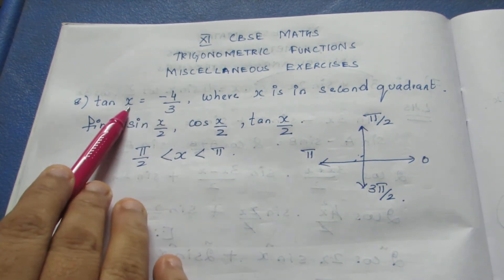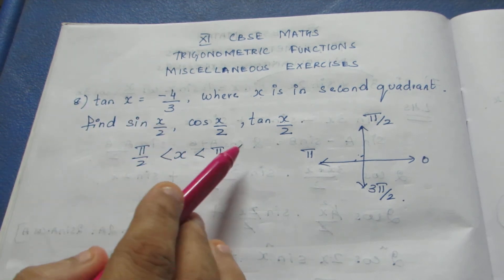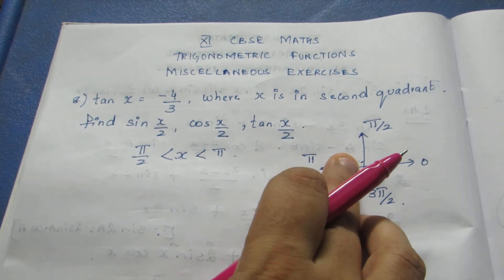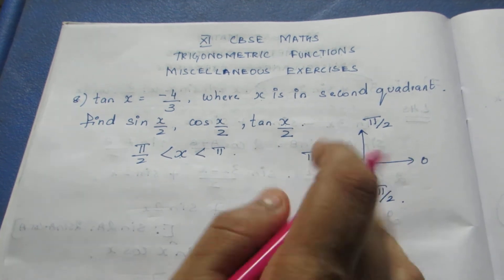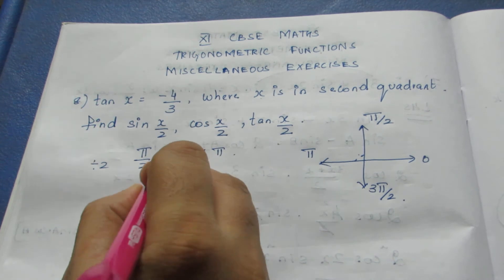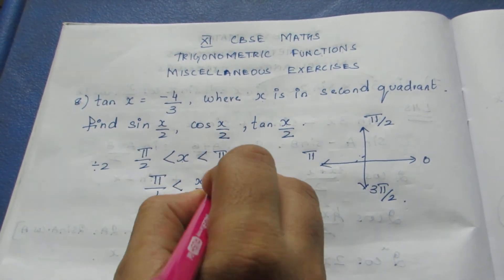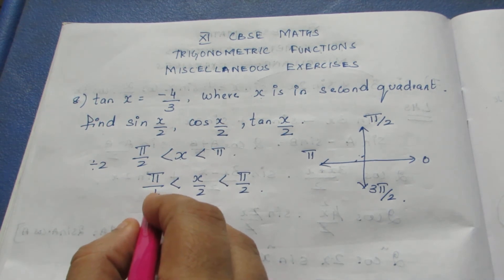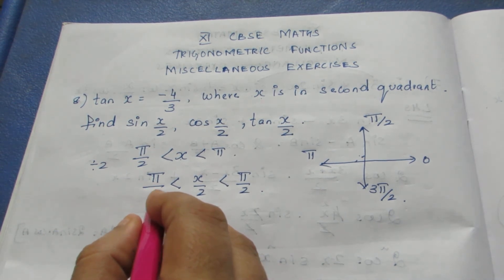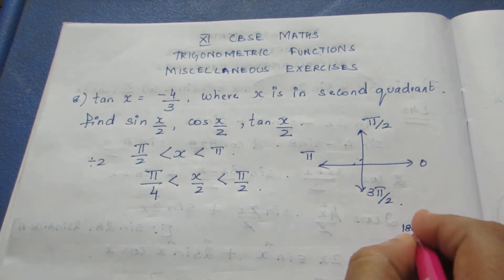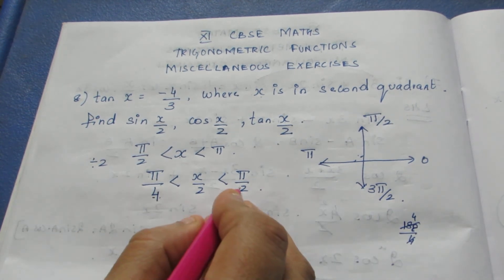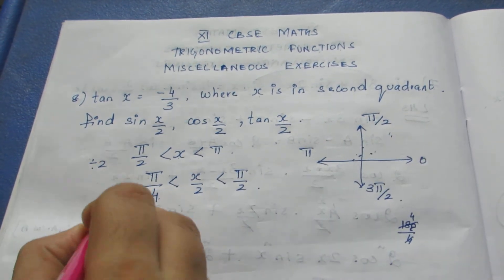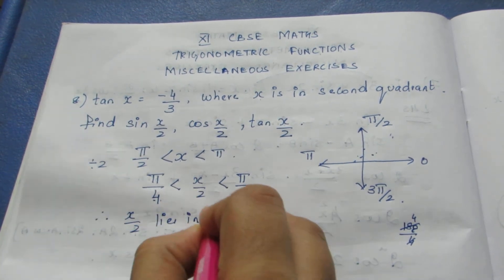We can't just divide the values to get x/2 that way. We need to know in which quadrant x/2 lies. x lies in the second quadrant, but it is not necessary that x/2 also lies in the second quadrant. So I am going to divide the whole inequality by 2. Dividing pi by 2 by 2 gives pi by 4, which is 45 degrees, and pi by 2 gives 90 degrees. So x/2 lies between 45 and 90 degrees, which means x/2 lies in the first quadrant.